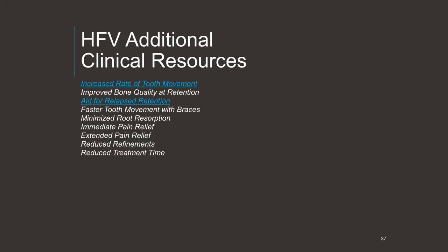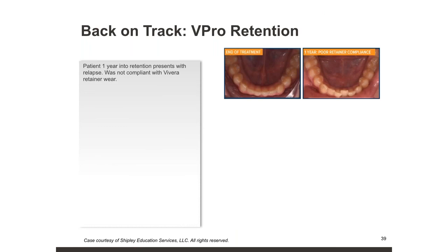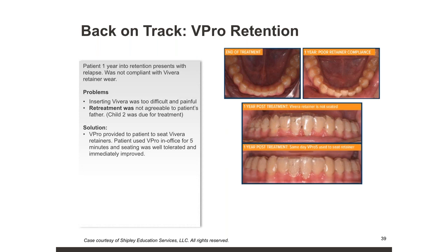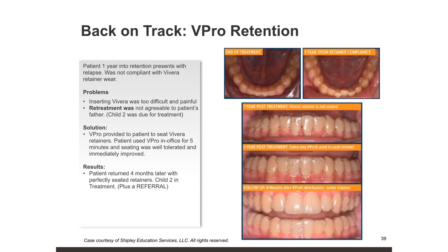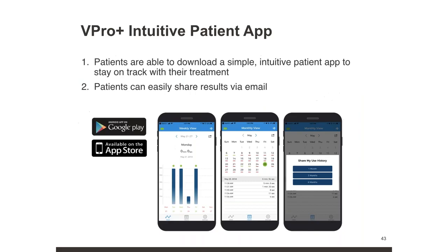High-frequency vibration devices: as an adjunct to MOPs, you can really go to three-day changes. It reduces treatment time and stabilizes afterward. It's a really cool trick for relapsed patients — put the retainer and do either MOPs or high-frequency vibration like the V-Pro5 and everything will sit right in place. The bone remodeling increases and retention of bone density increases as well. The device comes with a little app.